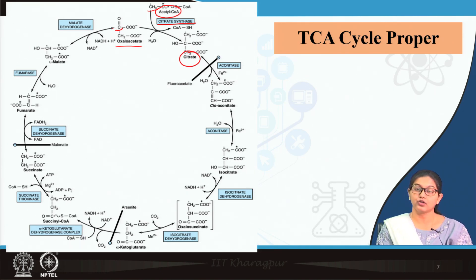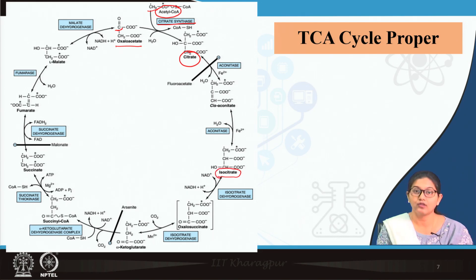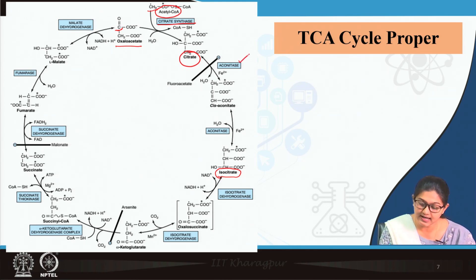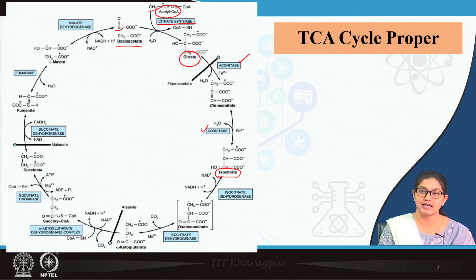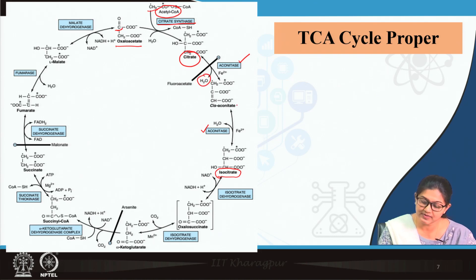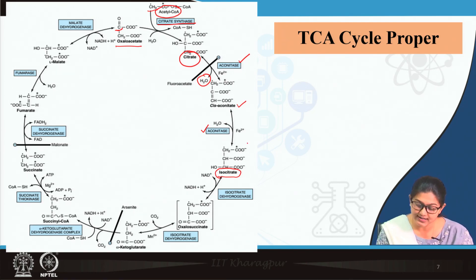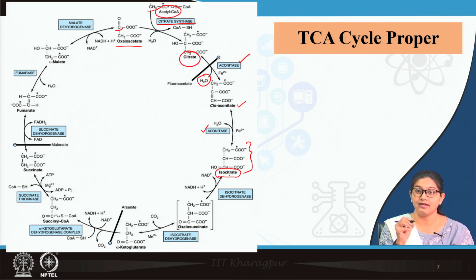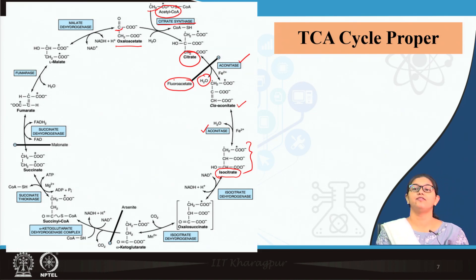Citrate undergoes isomerization to form isocitrate. This isomerization is a 2-step reaction and the enzyme is aconitase. First, citrate undergoes dehydration to form cis-aconitate; then cis-aconitate undergoes rehydration to form isocitrate. The enzyme aconitase is inhibited by fluoroacetate.